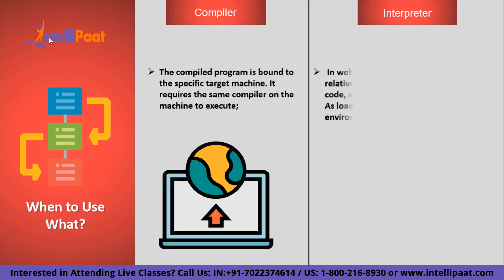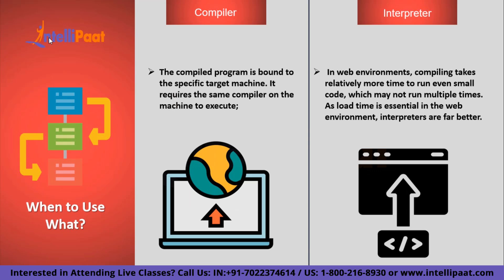The next difference is which translator is best. Both interpreter and compiler serve different purposes. Compiled programs are bound to a specific target machine and require the same compiler to execute. However, in web environments, compiling takes relatively more time even for small code that may not run multiple times, so as load time is essential in web environments, interpreters are far better. JavaScript, Python, and Ruby are based on the interpreter model, while C and C++ are based on the compiler model.